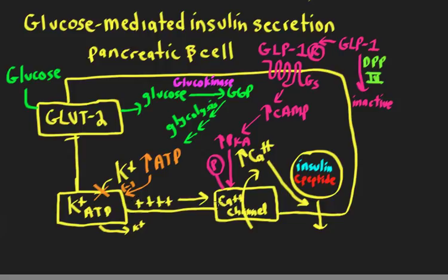Now unlike neurotransmitter release from nerve terminals, this isn't caused by sodium channels. This is caused by closure of potassium channels. Recall that cells have a high potassium concentration inside the cell compared to the outside, and normally potassium leaves the cell causing repolarization or hyperpolarization, which would tend to inhibit or decrease opening of calcium channels. So what we want is to close those channels, decrease the efflux of potassium, and cause the membrane potential to become less negative, depolarizing the membrane and opening these calcium channels.